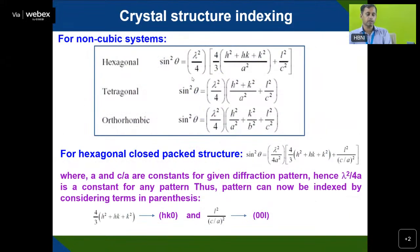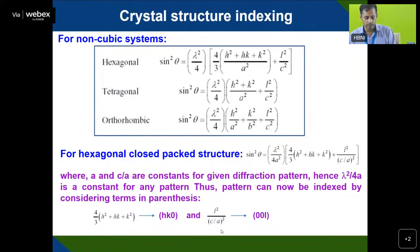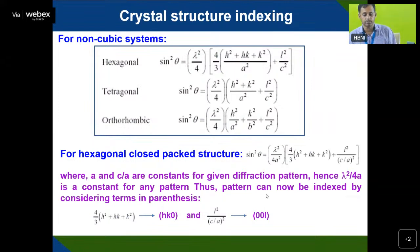For non-cubic systems like hexagonal, tetragonal, or orthorhombic, you use more complicated equations, but modern software can easily identify the plane types. For a hexagonal system, 1/d² = (4/3)(H² + HK + K²)/a² + L²/c², with special cases for HK0 or 00L planes.